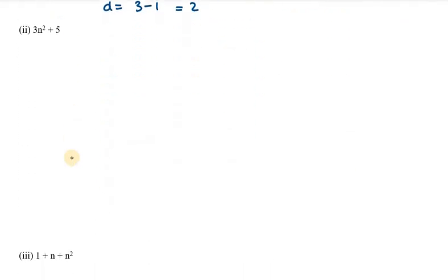Let's start with the second one. Again we are given the nth term, an equals 3n square plus 5. We need to find a1, a2, a3, and a4. So a1 will be 3 times 1 square plus 5, which is 3 plus 5 equals 8.